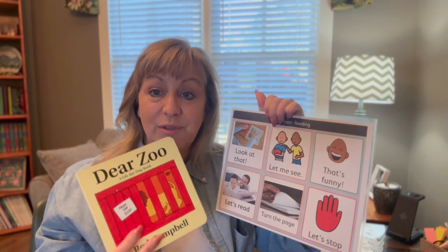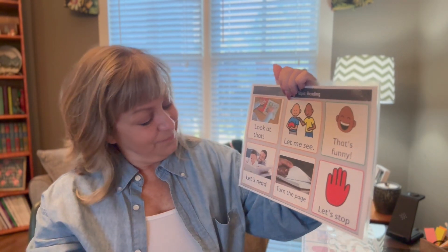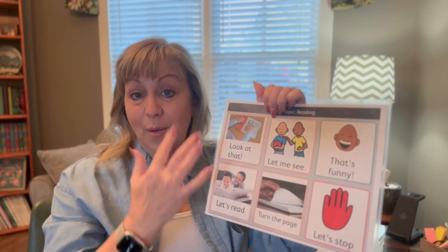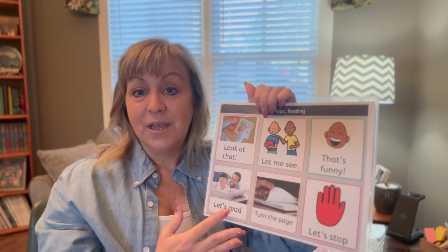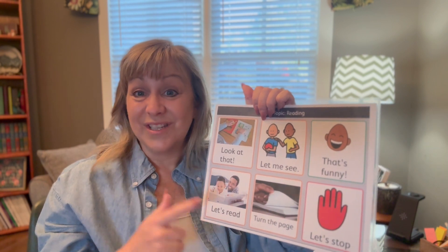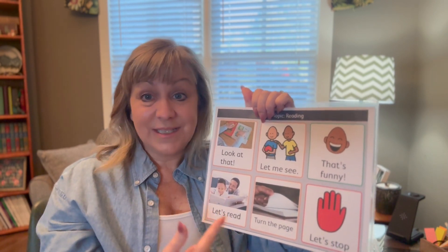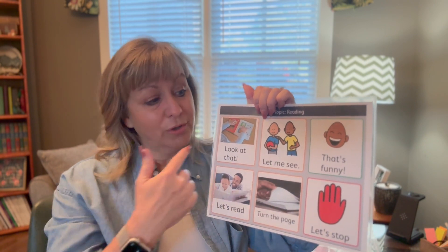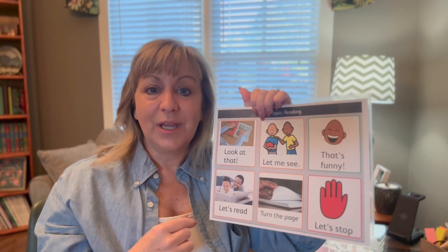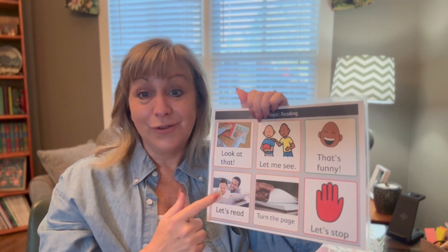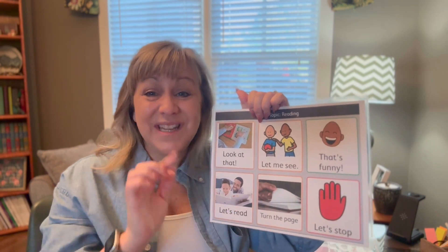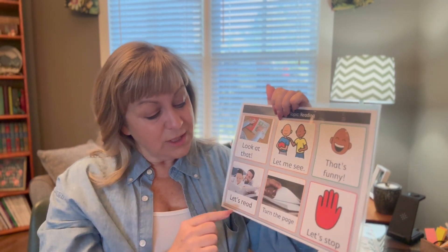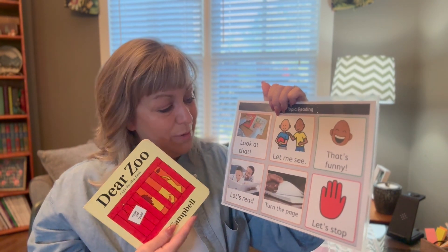When sitting down with a student to read, I'll say 'hey, let's read' and then wait. Make sure the communication page or device is close enough that they can look at it, potentially touch it, or say the words they just heard. I give them about 10 seconds of wait time to see if they do anything. Some students are very emergent communicators — all they may do is look at the symbol you pointed at, and that's okay, because attention to the symbol is one of the first things we want to see.